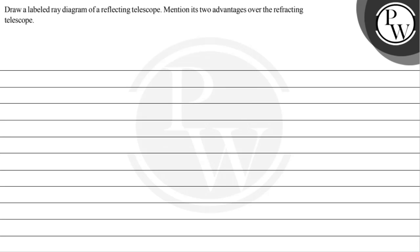Hello! Let's read out the question first. Draw a labeled ray diagram of a reflecting telescope. Mention its two advantages over the refracting telescope. So for this, let's see the solution.